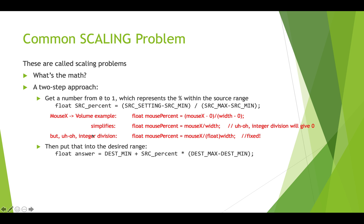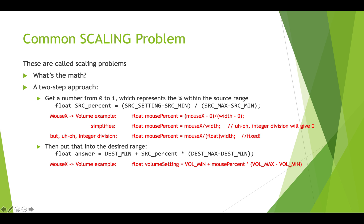Once we've got that percent, we use it to get our value in the desired range. We say: float answer = destinationMin + (sourcePercent * (destinationMax - destinationMin)). In our mouse-to-audio-volume example, we take volumeMin — which we said was 10 — and add to it mousePercent multiplied by the volume range.